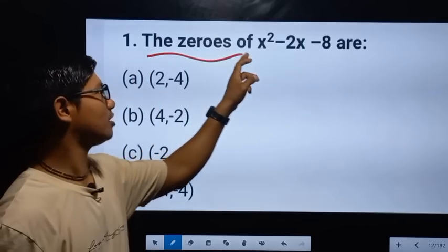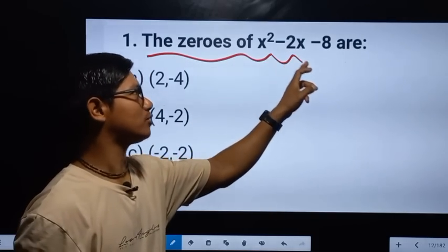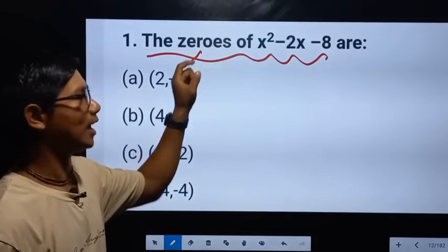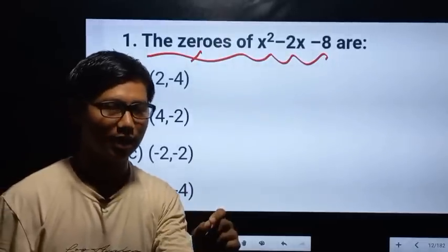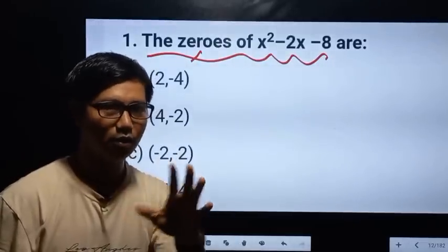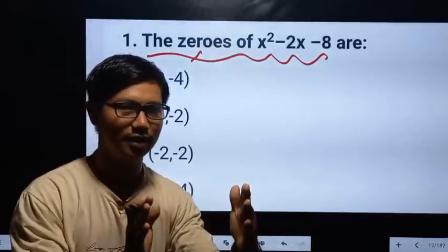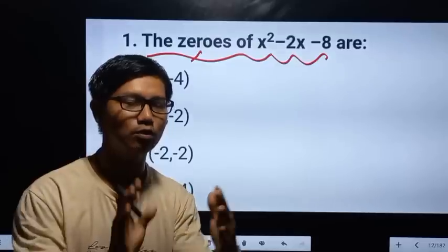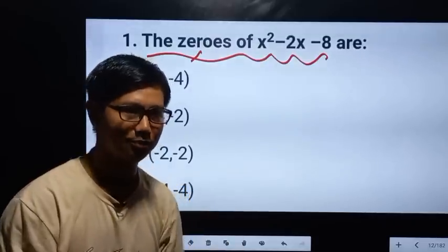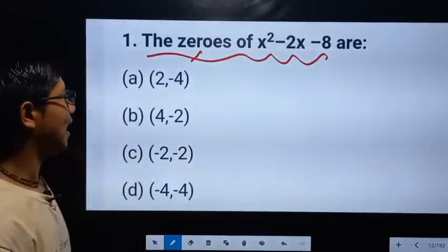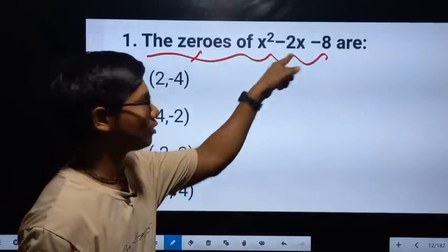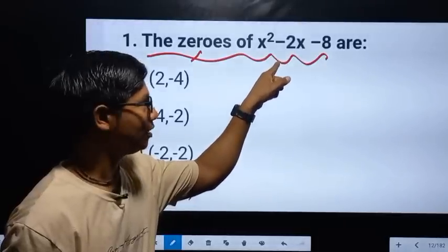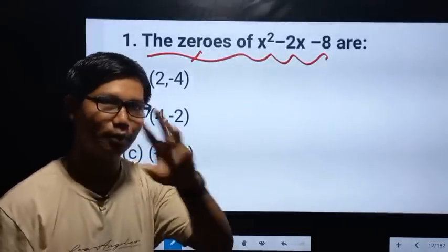The zero of x is minus 26 minus 8. We will show you later in the next situation what you should repeat. This quadratic equation does not exist from ourselves.